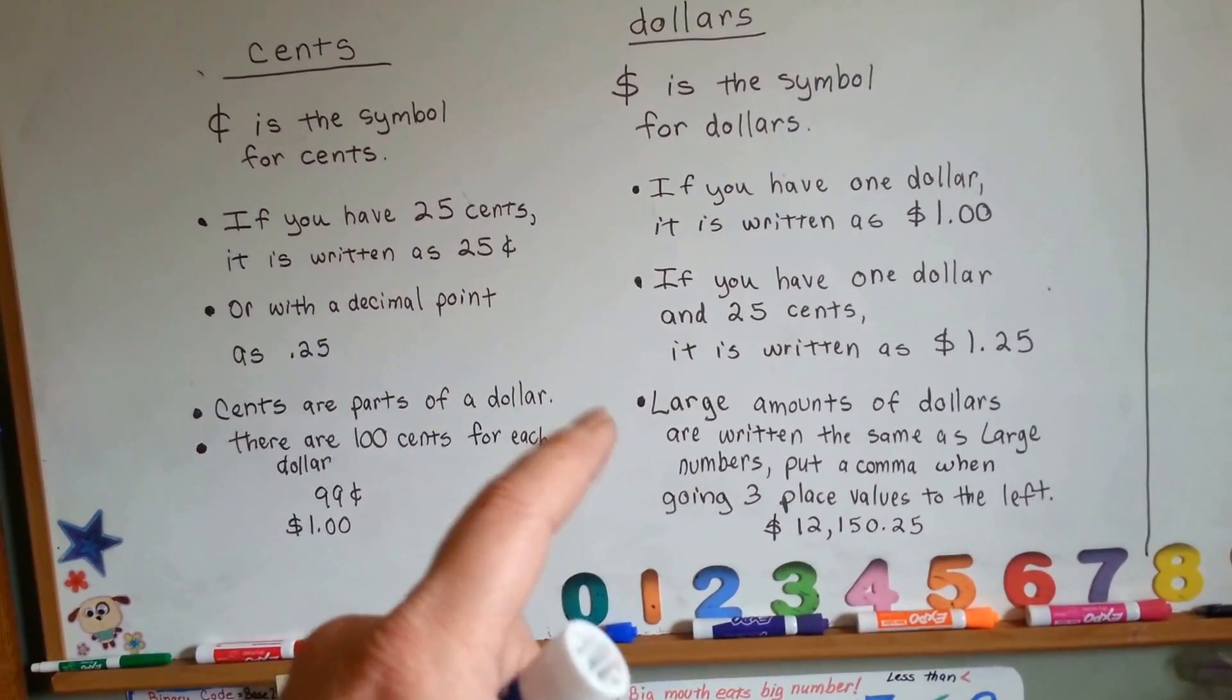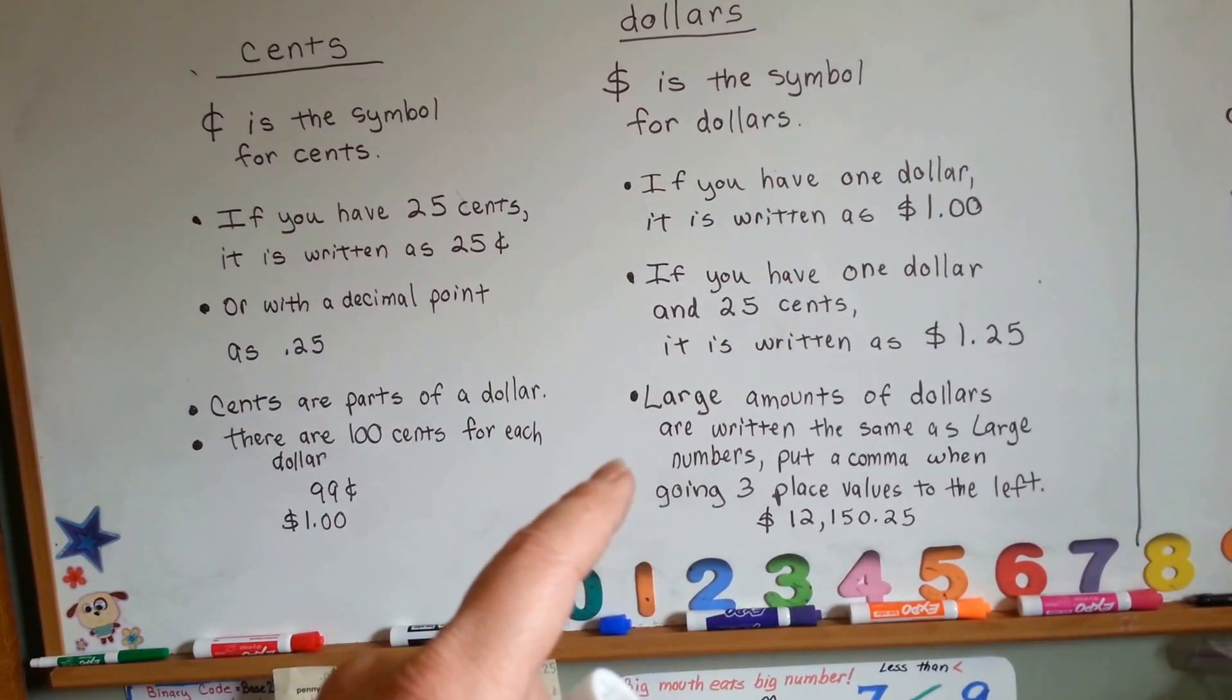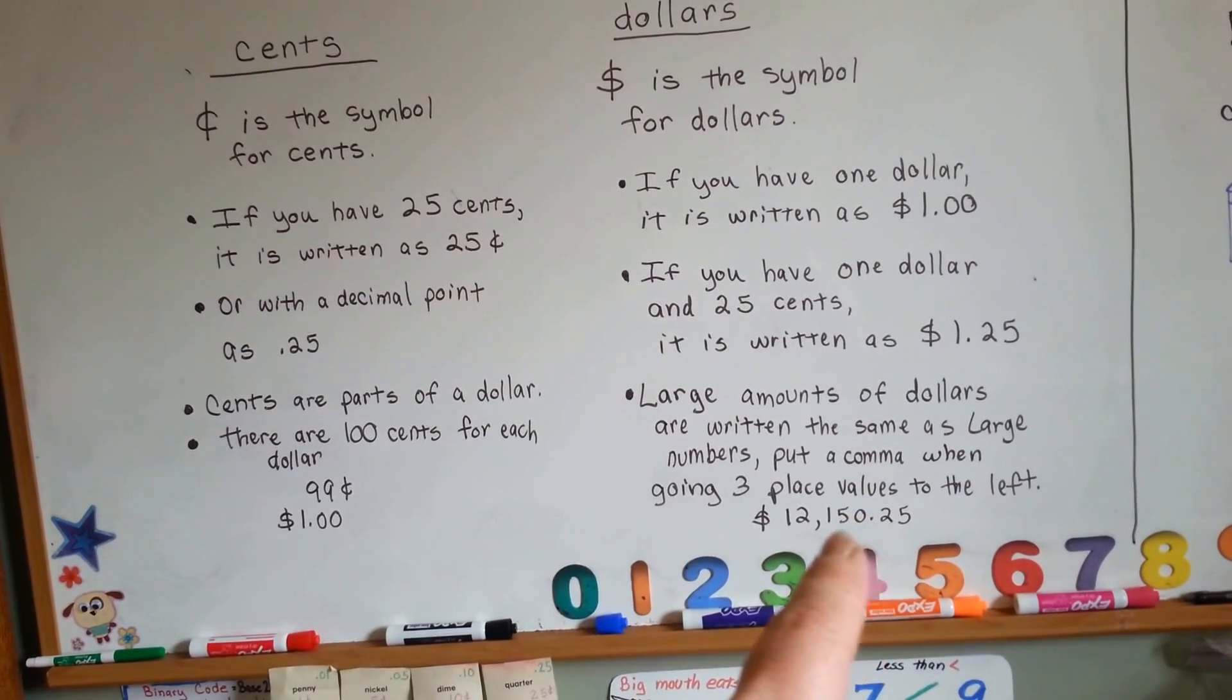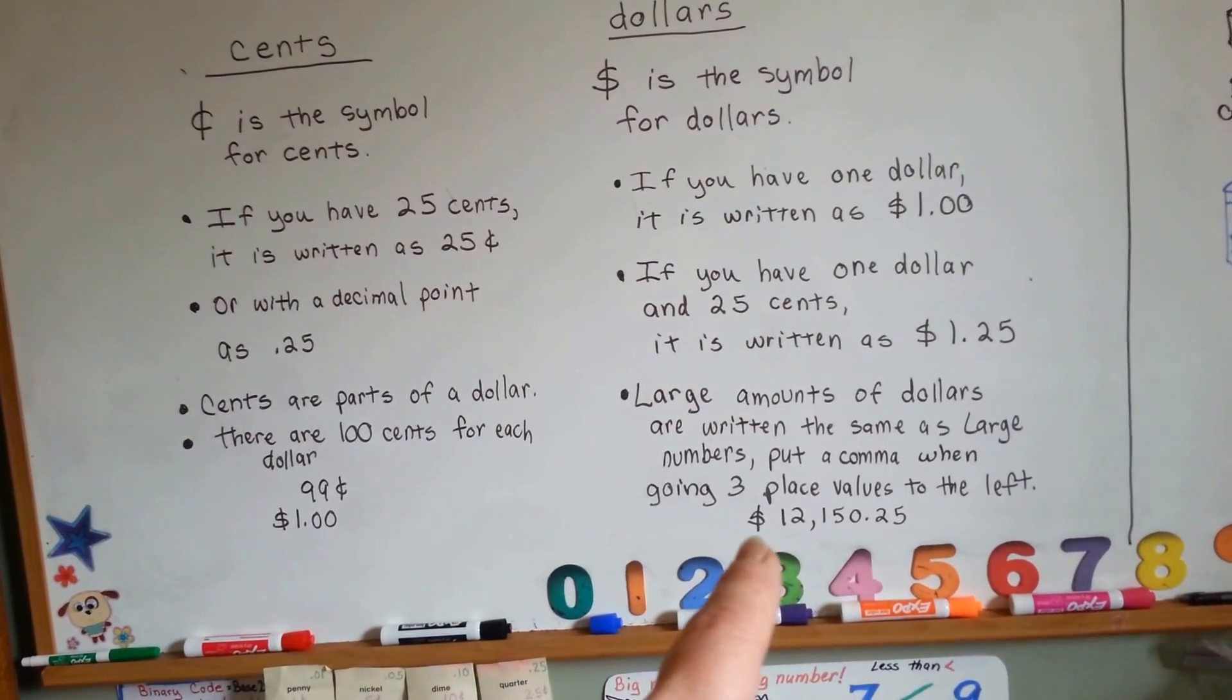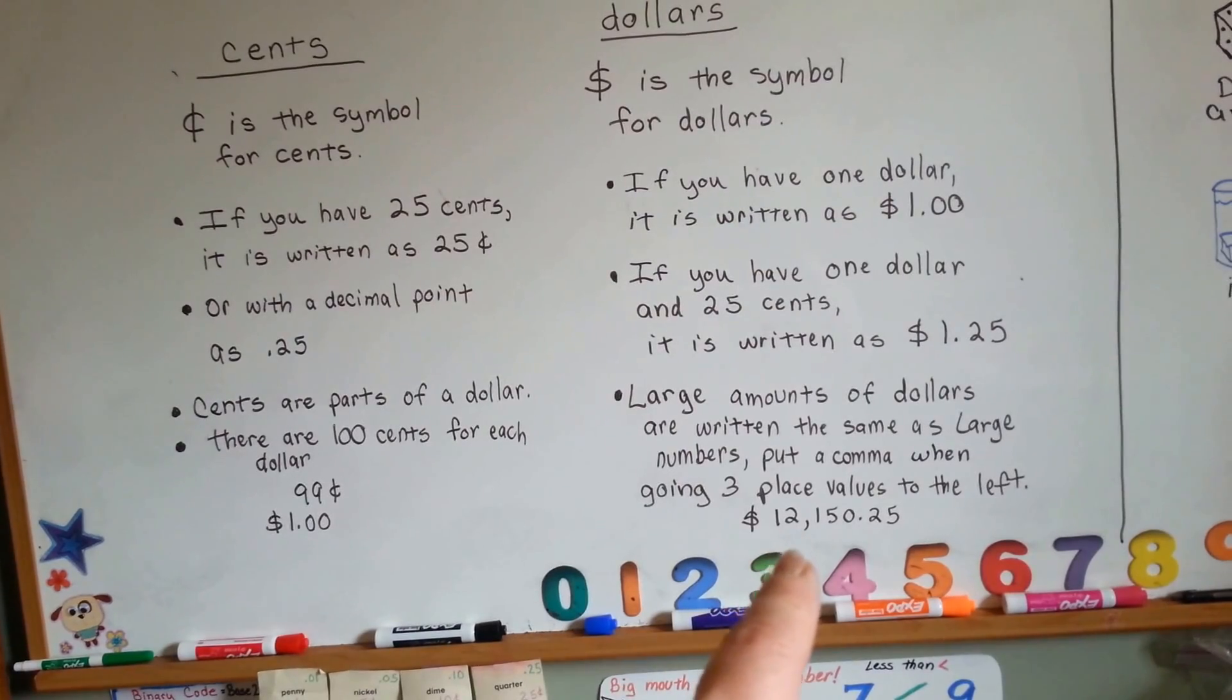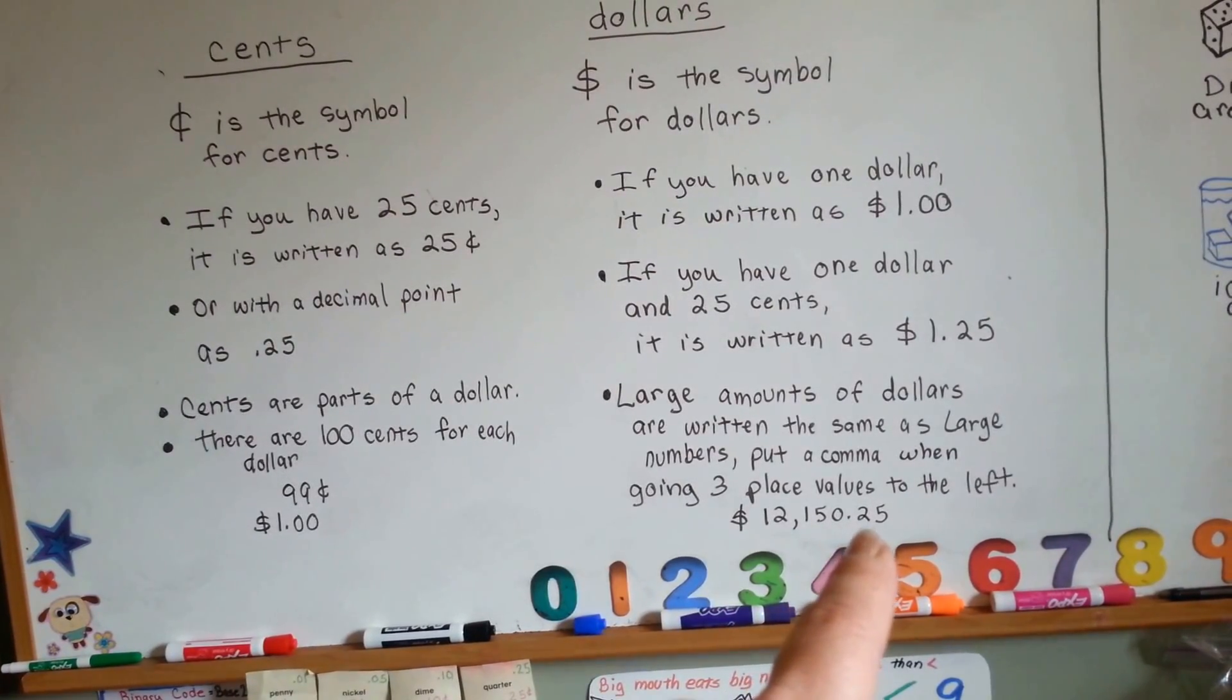Large amounts of dollars are written the same as large numbers. You put a comma when going three place values to the left. So when you get one, two, three place values to the left, you would put a comma to show that you're in the thousands of dollars. This would be read as $12,150 and 25 cents.